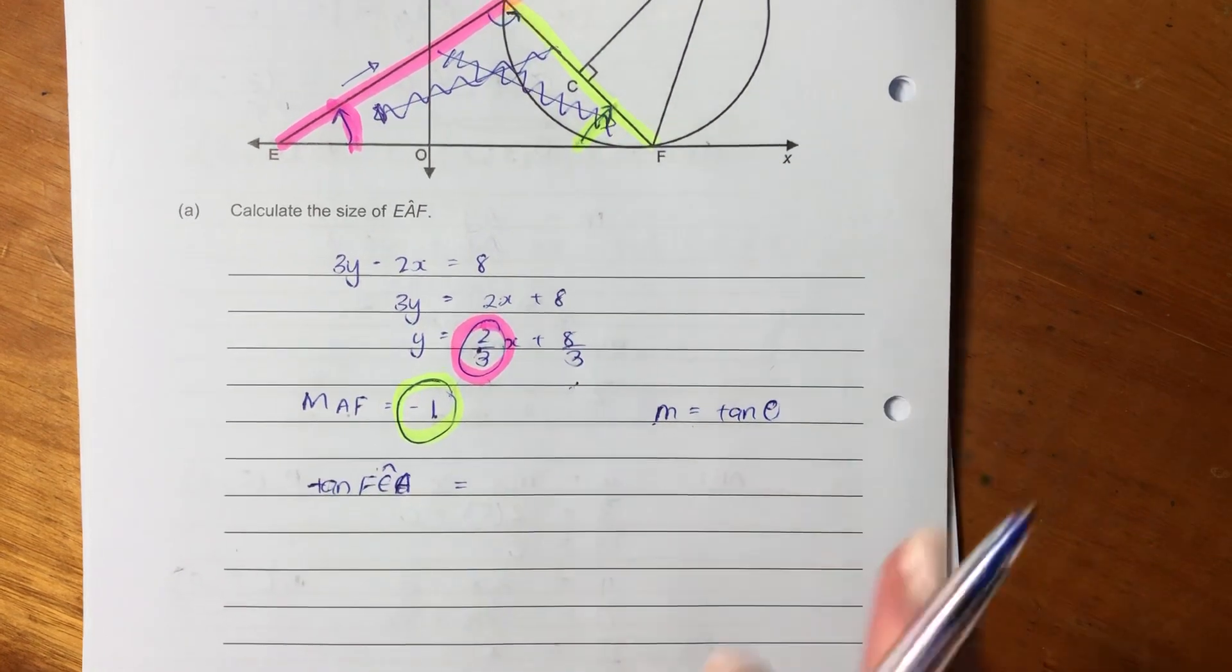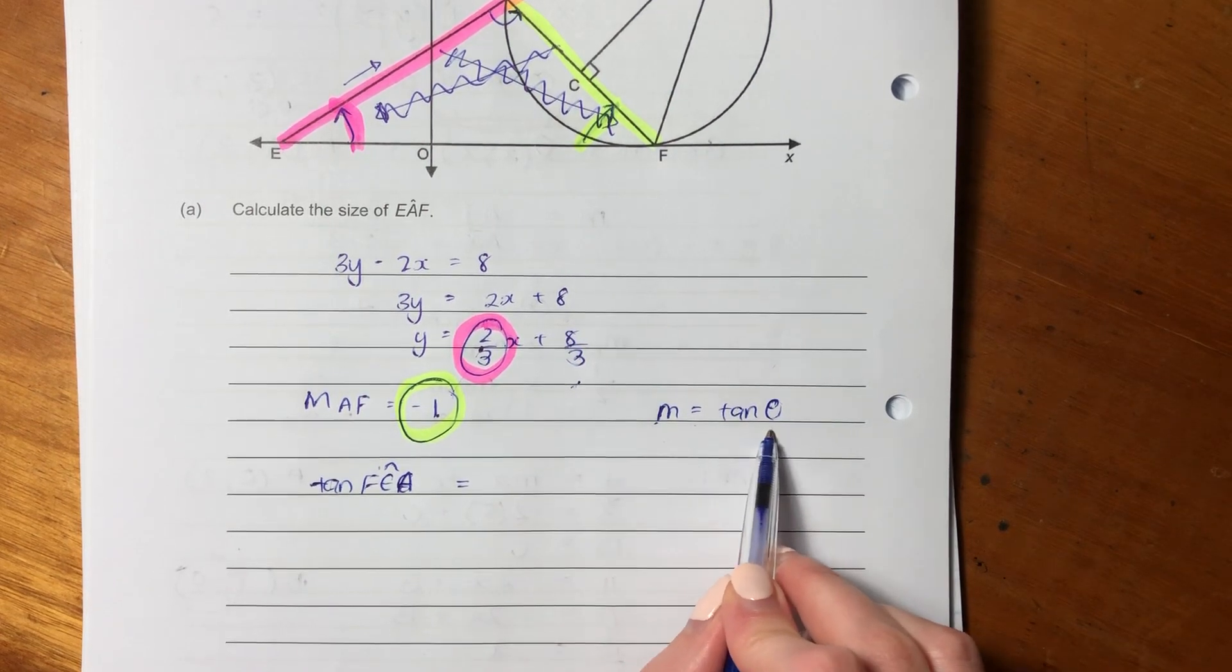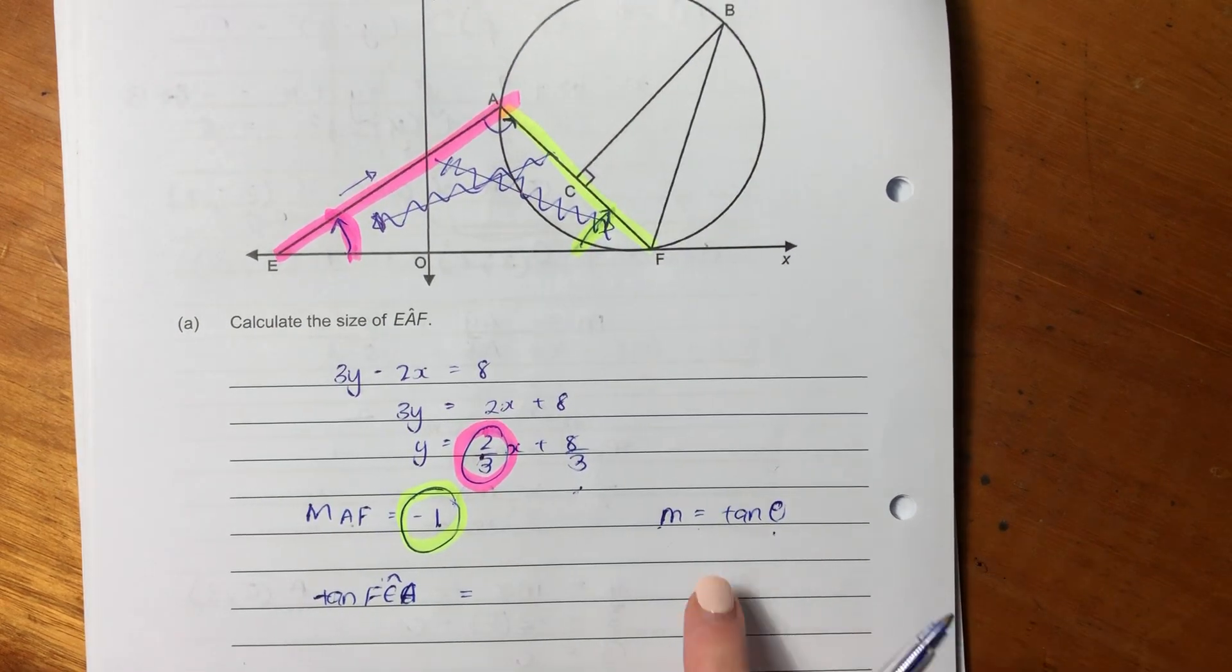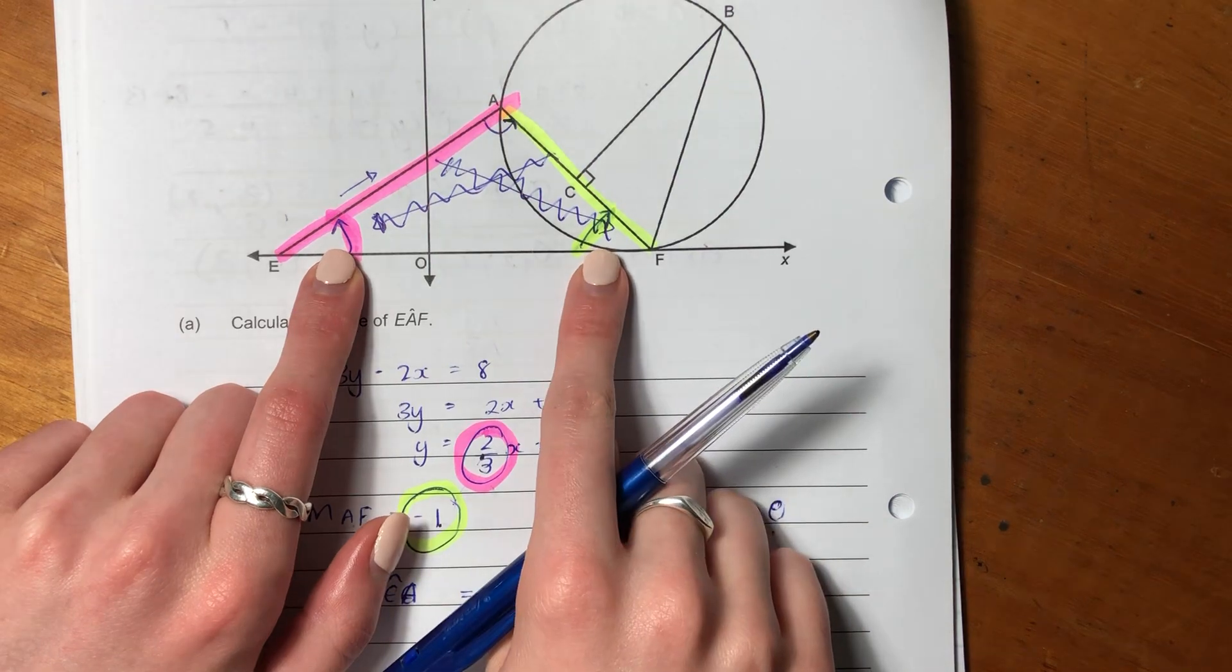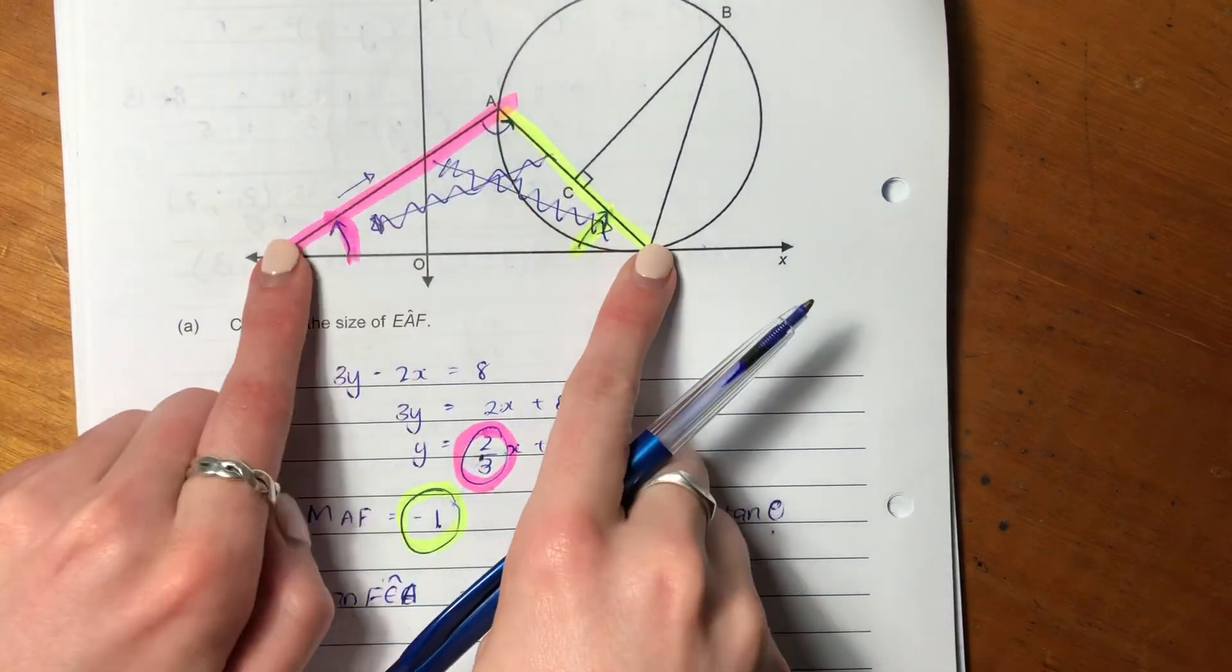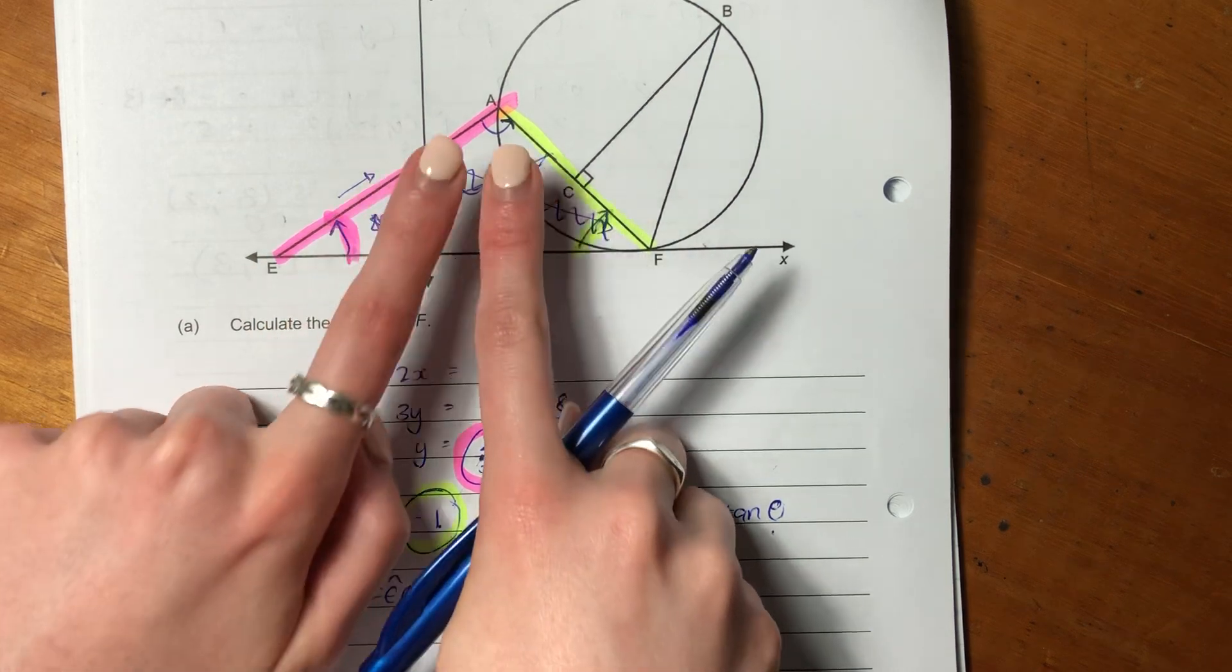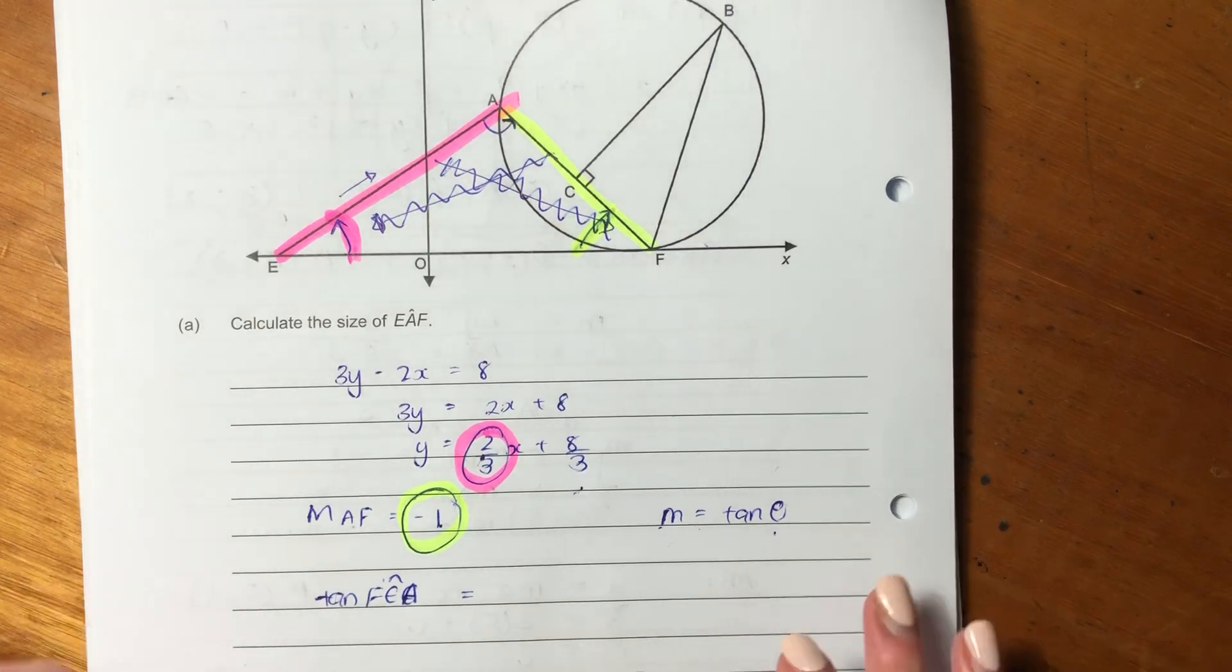So effectively, what you should be thinking about is gradient equals tan theta. The reason I say that is because if we use this formula, we can get the angle there and the angle there. The reason we can get both those angles is because we have gradients of both those lines. If we get those two angles, we can work out the last angle using angles of a triangle.